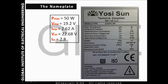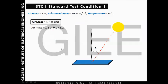The Standard Test Condition, or STC, consists of: air mass equals 1.5, solar irradiance equals 1000 watts per square meter, and temperature equals 25 degrees Celsius.